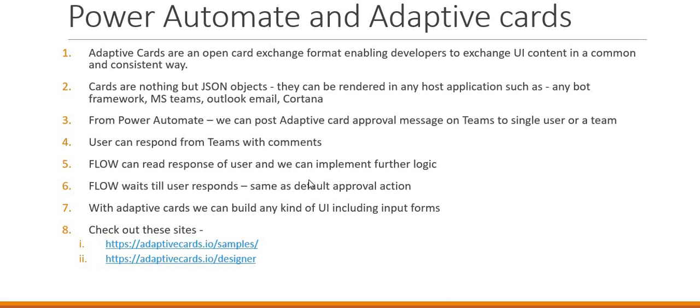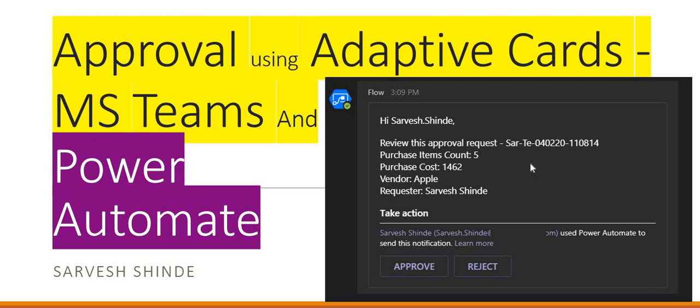So that's it. In this video we have seen what an adaptive card is, how we can use it, and how we can generate it using these URLs. There are samples available, you can design your own card, and there are controls available. You can use Power Automate to send these adaptive cards across any applications like Teams, Outlook, or Cortana, and you can read the response from the user. I hope this will help you guys — thank you for watching.